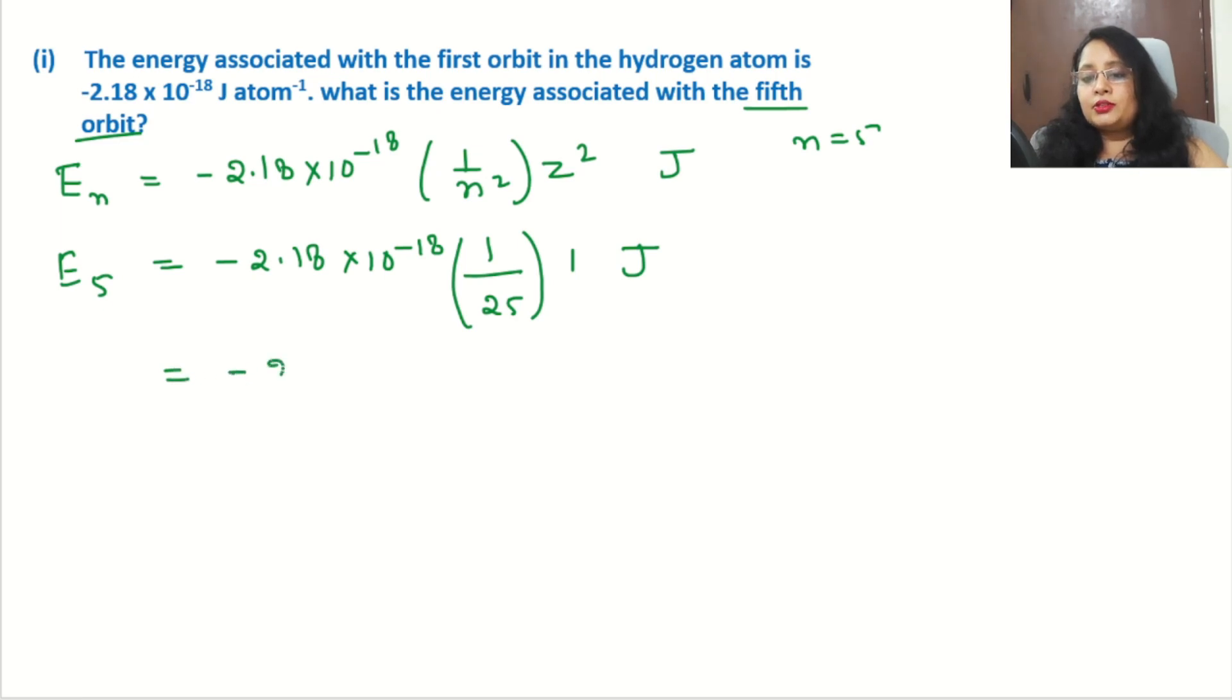So we can write -2.18 × 10^-18 / 25. Now if we shift the decimal, we get -2.18 × 10^-20 / 25, because shifting the decimal two steps rightward means minus 2 is added. So -18 - 2 = -20.